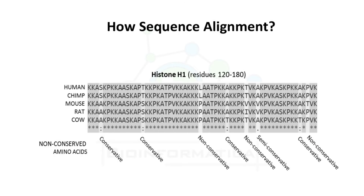How is sequence alignment done? We can align two or more sequences. Alignment of two sequences is termed pairwise alignment, whereas alignment of more than two sequences is termed multiple sequence alignment. We will study about it in our upcoming videos, so stay tuned.